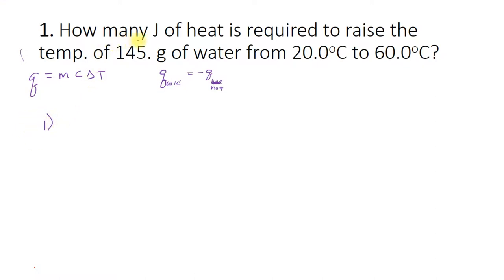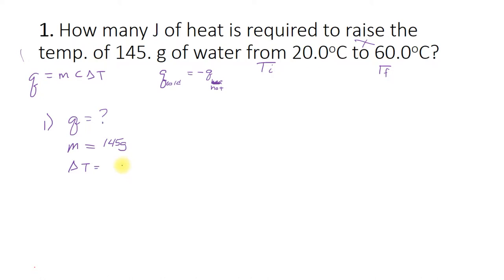For question number one, it's looking for joules of heat, so I know that heat is Q. It's required to raise the temperature of 140 grams — that is a mass, so I put that down in my list of variables. As I'm reading the question, I'm picking apart the information I have and what it's looking for. It's going to raise the temperature — raise is positive — from 20 to 60 degrees. From means that's where I'm starting, so that's the initial. To is the final. So my delta T is going to be 60.0 degrees Celsius minus 20.0, because it's always final minus initial.